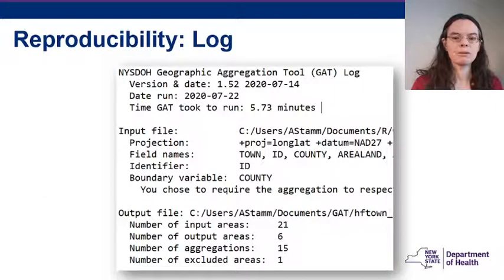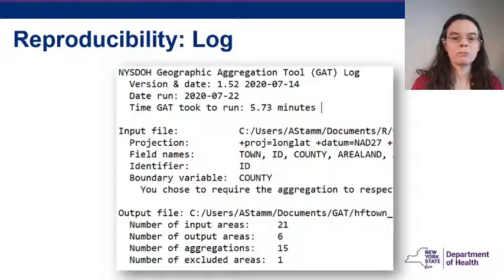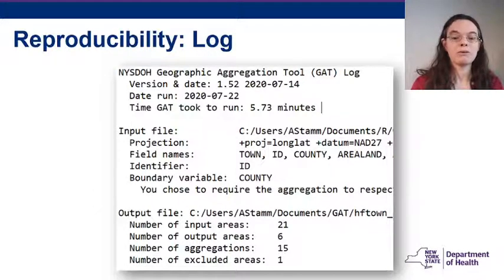Reproducibility — the log: the log contains information about GATT's run, the input shapefile, merge settings, and the aggregation variables. The log helps users to, first, remember what settings they used six months later; second, identify areas that may not have aggregated correctly; and third, read the output shapefile into another GIS program.